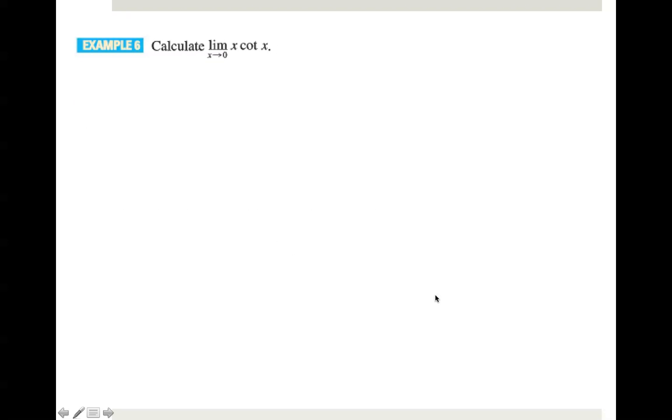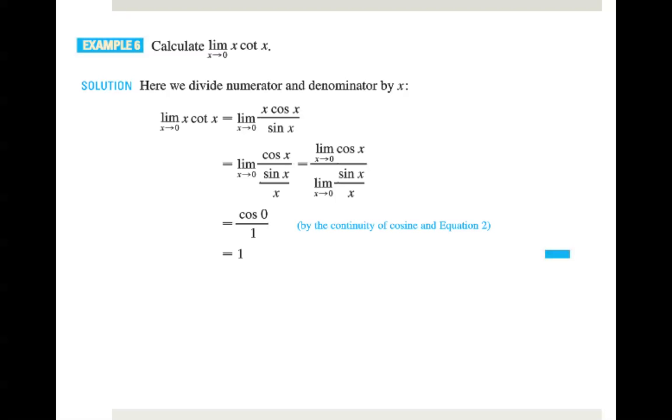Calculate the limit as x approaches 0, x cotangent x. Here we know that cotangent of x equals x cosine x divided by sine x. We follow the directions and we know the continuity of cosine in equation 2 so we can get from this to equals 1.